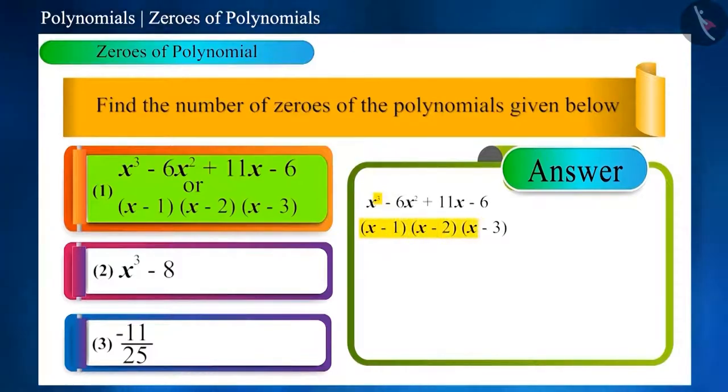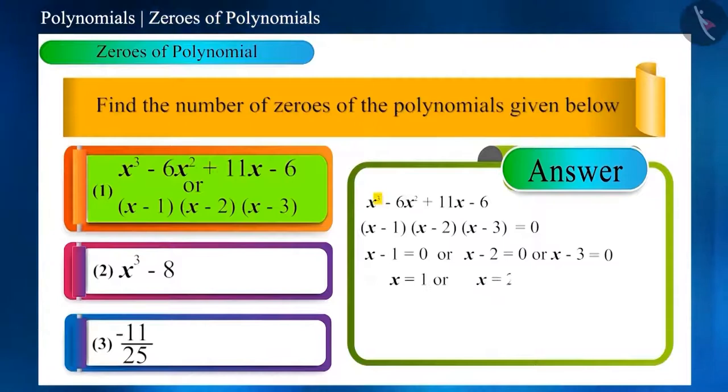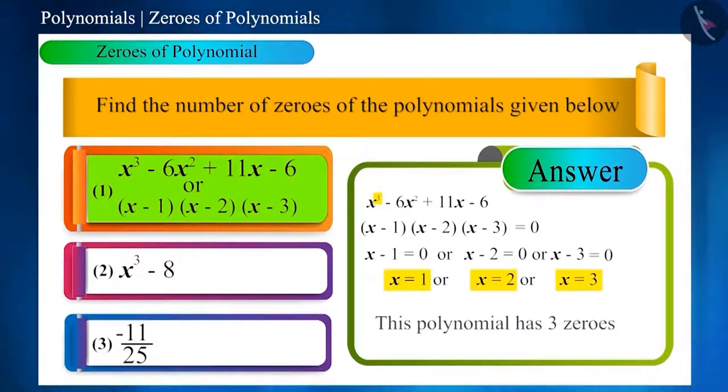If we equate (x-1)(x-2)(x-3) to 0, then we will get x = 1 or x = 2 or x = 3. Therefore, first polynomial has three real zeros: 1, 2 and 3. Real, because these are all real numbers.